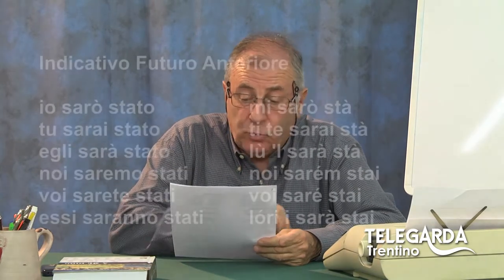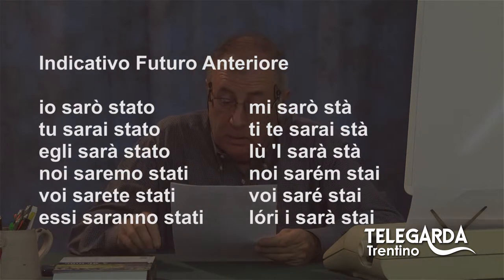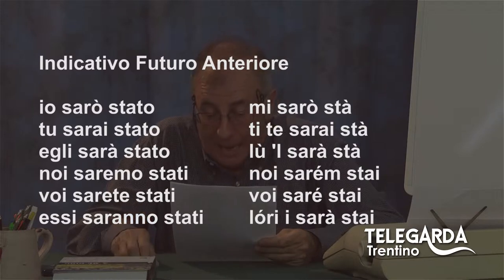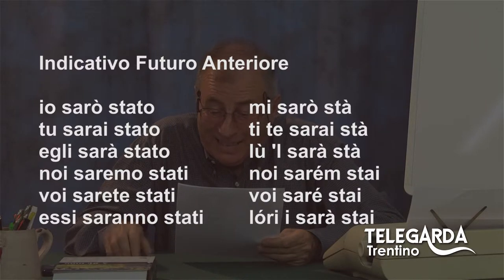Il futuro anteriore è semplice: io sarò stato, tu sarai stato, egli sarà stato, noi saremmo stati, voi sarete stati, essi saranno stati. Si prende il futuro semplice dialettale e si aggiunge sta. Quindi: mi sarò sta, ti te sarai sta, l'ul sarà sta, noi saremm stai, voi sarei stai, l'ori i sarà stai.